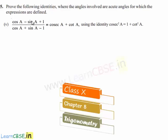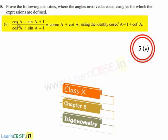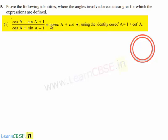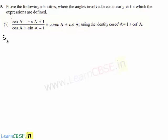Now moving on to the fifth bit of the fifth problem. He has given us to prove the equality: (cos a - sin a + 1) / (cos a + sin a - 1) = cosec a + cot a, using the identity cosec² a = 1 + cot² a.